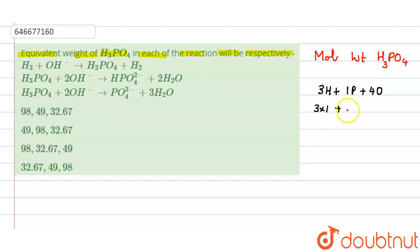1 plus phosphorus is 31 plus 4 into oxygen's atomic mass is 16. So this will be 34 plus 64, that is 98 grams.